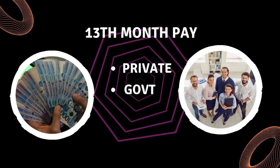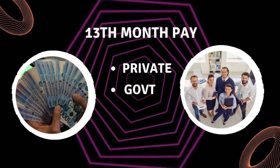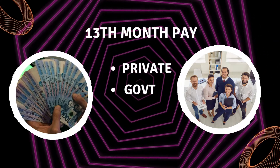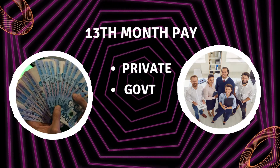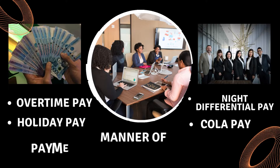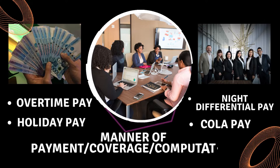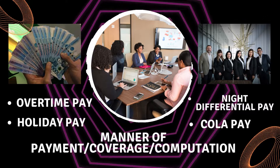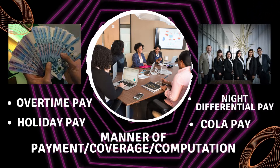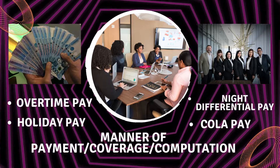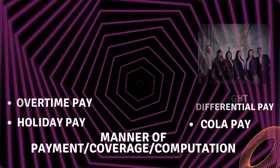13th month pay — how it is computed, what is the coverage, what happens in different scenarios, and how it applies in both private and government sectors. Also covered: overtime pay, holiday pay, night differential pay, and cost of living allowance (COLA) — the differences between them, how they are applied, whether they are part of the 13th month pay allocation, the scenarios involved, and how each is computed.